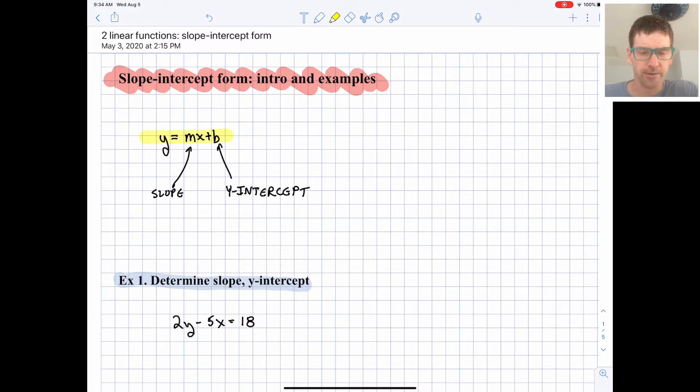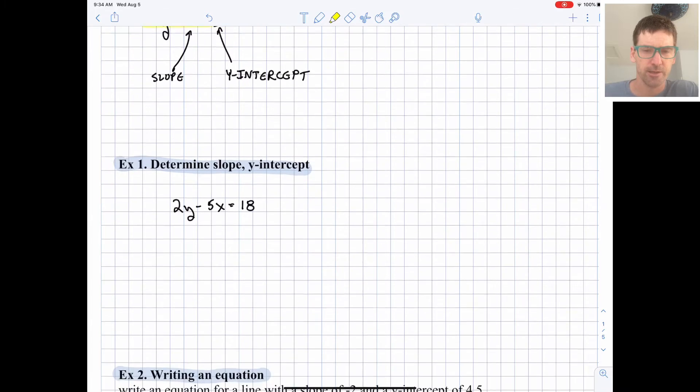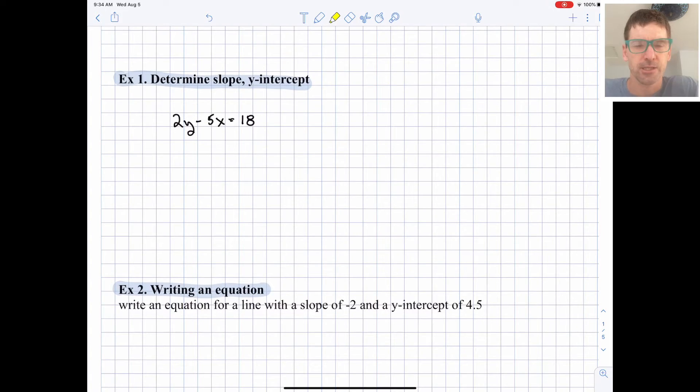We'll do a variety of different examples with this form of a linear function. The first example we'll do is to figure out what the slope and the y-intercept are if we know the equation. For this example we have 2y minus 5x equals 18 and we need to get it into that y equals mx plus b form. We're going to basically isolate for y, we need to solve for y.